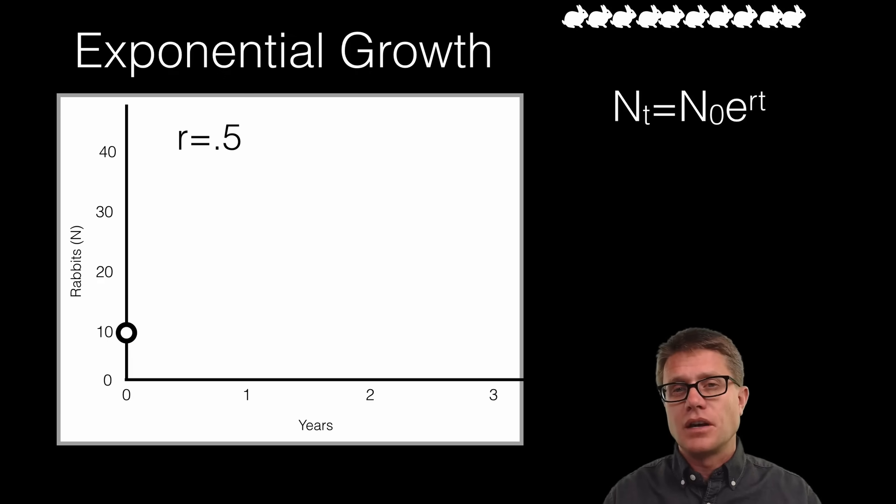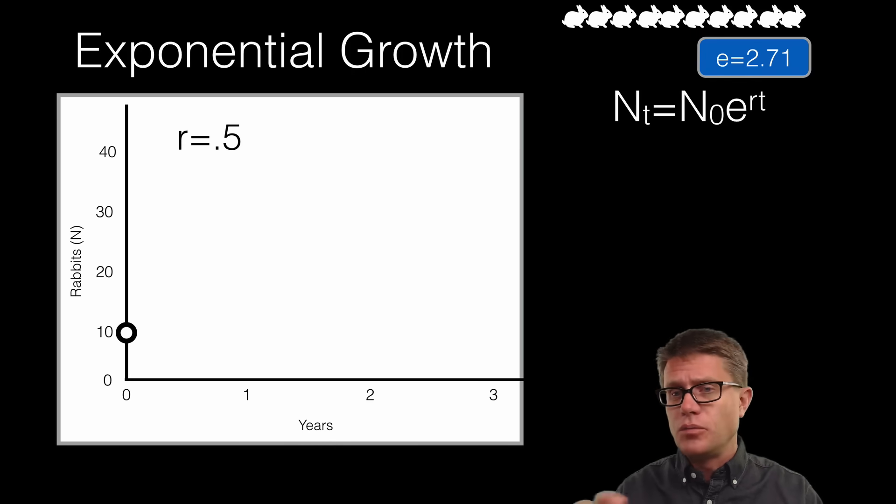So if we start to use models to explain how this works, a really important model is the exponential growth model. And so the equation looks like this. It is a little scary but it is really not that bad. N sub T is going to be the population at any time into the future. N sub O is going to be the initial population. So let us say we start with a population of 10. R is going to be the growth rate. That is that intrinsic growth rate. And T is going to be time. So the only thing that you really do not know in this equation is E. E is going to be E, the mathematical constant. So it is a number. It is just like pi. It is going to be 2.718. It just keeps going like that. So for our purposes we just think of it as 2.71.